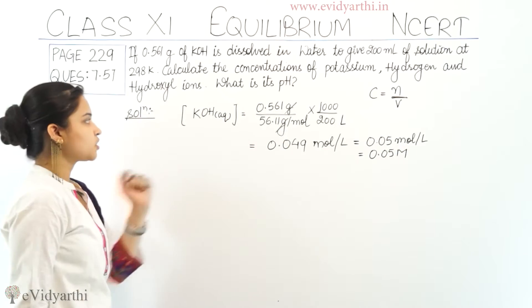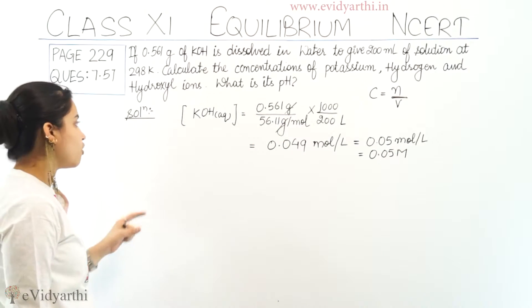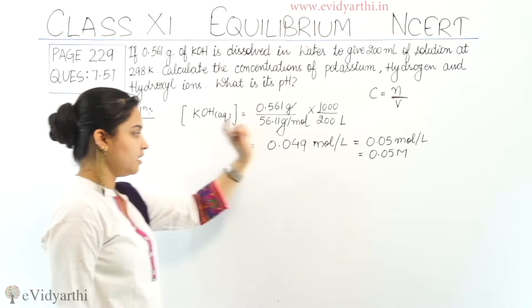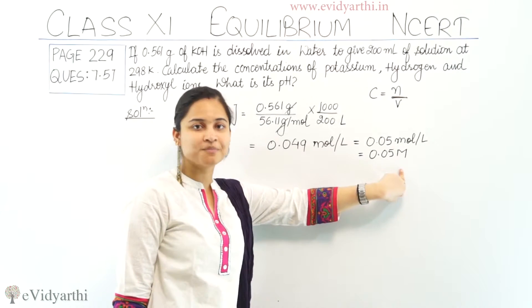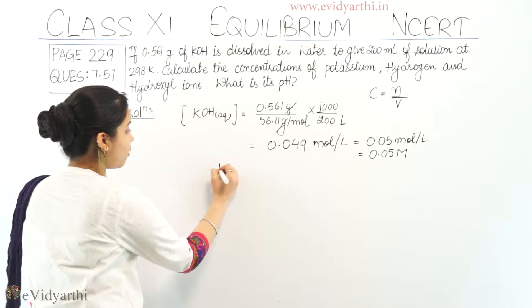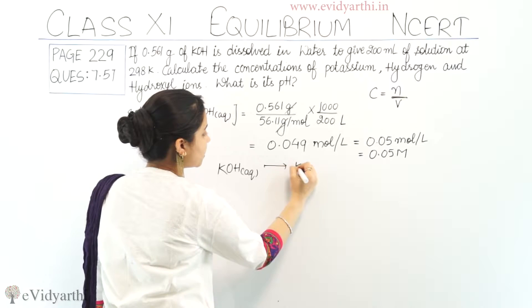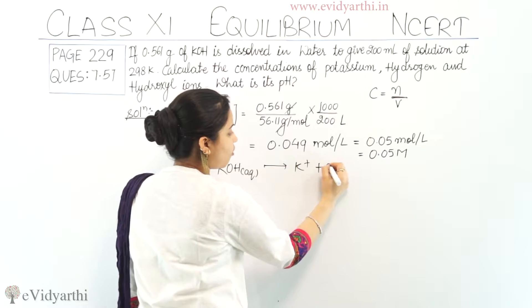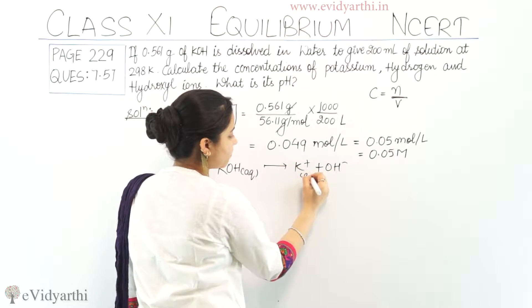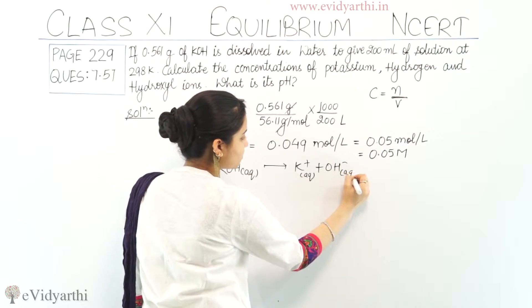This is the concentration of potassium hydroxide which is 0.05 molar. Now, KOH in the aqueous state get dissociated into K positive plus OH negative. Ye bhi aqueous and this is also aqueous.